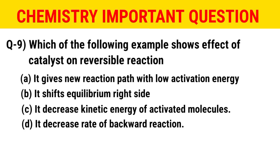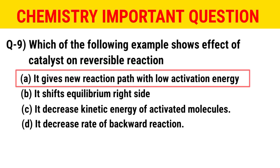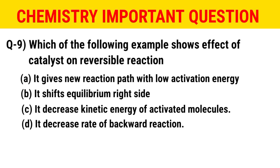The next question: which of the following shows the effect of a catalyst on a reversible reaction? The options are: it gives a new reaction path with low activation energy; it shifts equilibrium to the right side; it decreases the kinetic energy of activated molecules; or it decreases the rate of the backward reaction. The correct option is A — it gives a new reaction path with low activation energy.